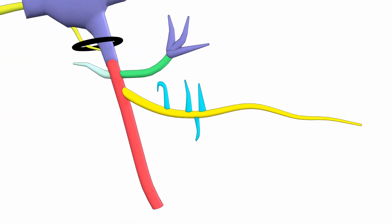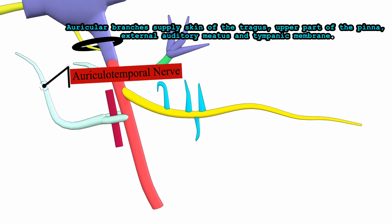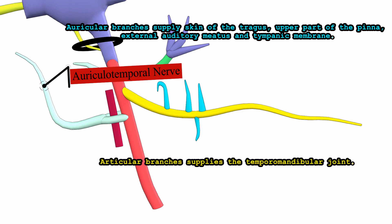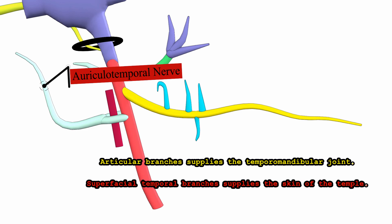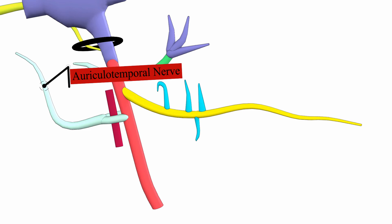The posterior division gives three nerves. The auriculotemporal nerve arises by two roots around the meningeal artery, runs backwards between the neck of the mandible and the sphenomandibular ligament, and gives several branches: auricular branches supply the skin of the tragus, upper part of the pinna, external auditory meatus, and tympanic membrane; articular branches supply the temporomandibular joint; and superficial temporal branches supply the skin of the temple. It also carries secretomotor fibers to the parotid gland.